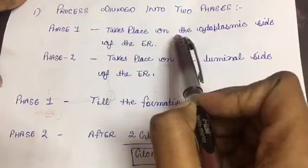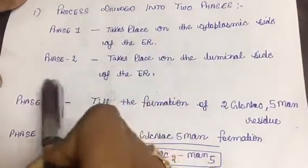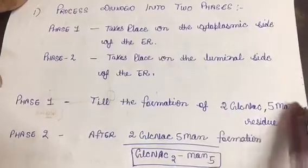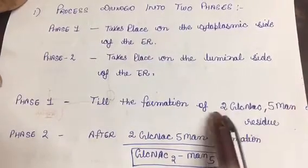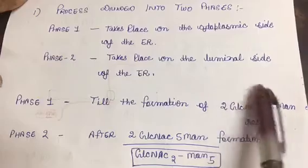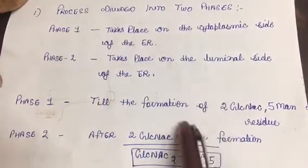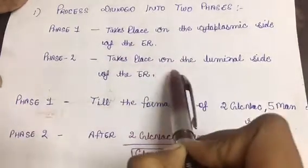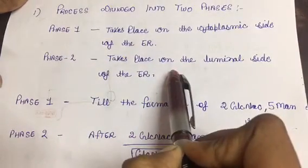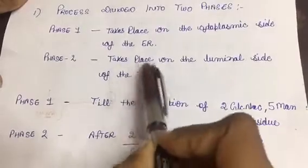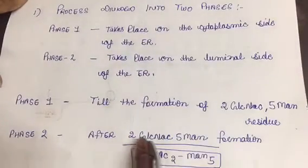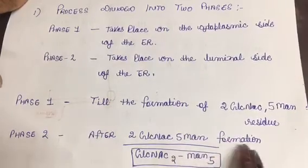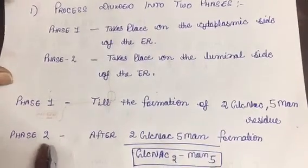After that comes phase two. When these residues form - five mannose and two N-acetylglucosamine - then phase two starts after N-acetylglucosamine.